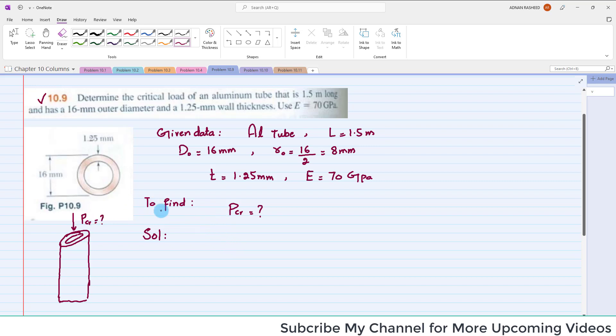You can see that the diameter is given, the outer diameter is 16 millimeters. From here you can see, if this is the center point, this will be R naught.